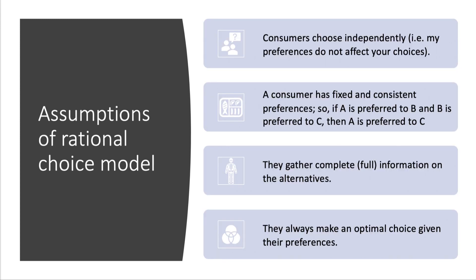The assumptions of the rational choice model are still worth understanding. First, consumers choose independently — my preferences and tastes do not affect your choices. Second, consistent preferences: if I prefer A to B and I prefer B to C, then by transitivity I prefer A to C. The assumption is also that people gather full, complete information on all the various alternatives, and given this they always make an optimal choice given their preferences.